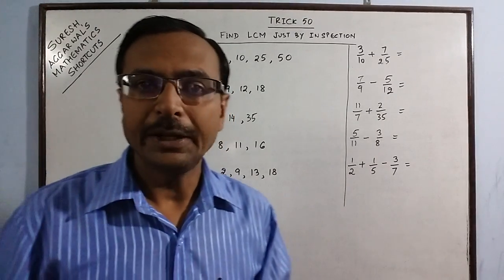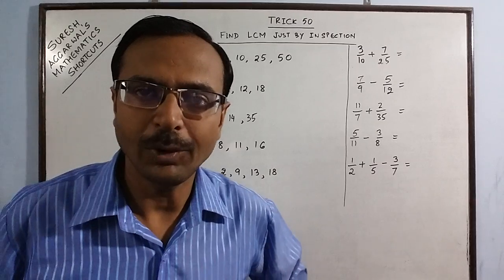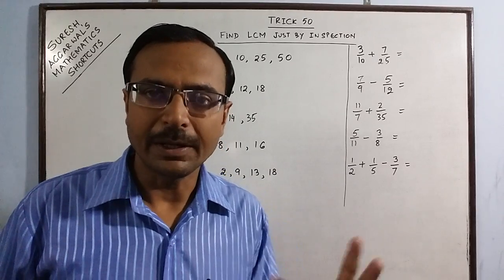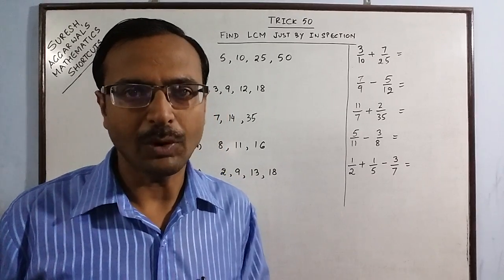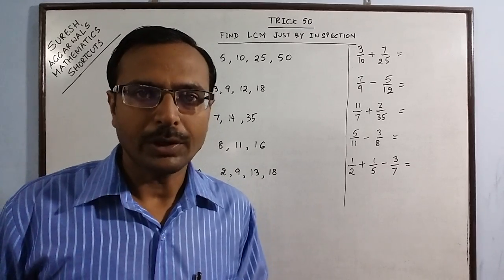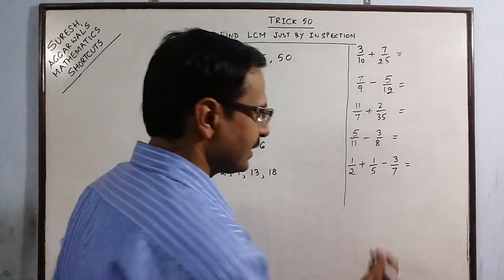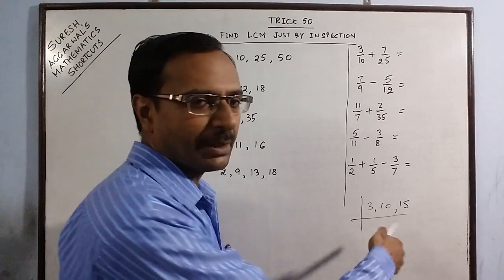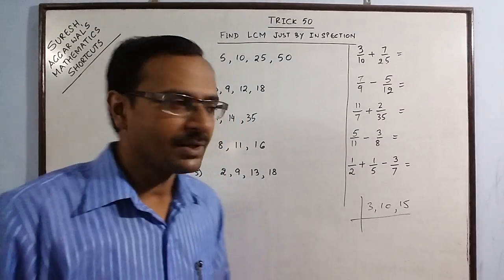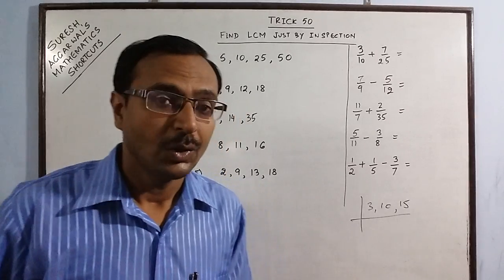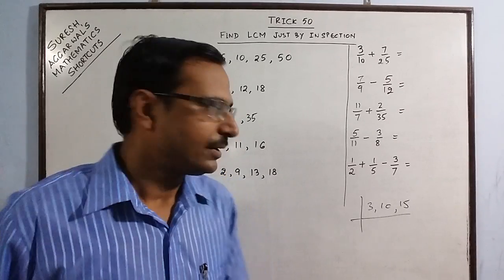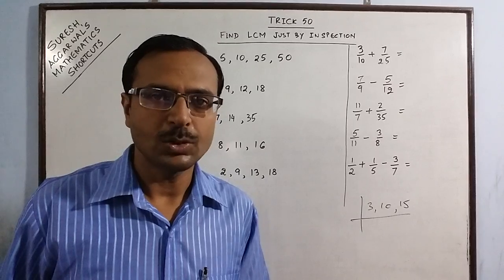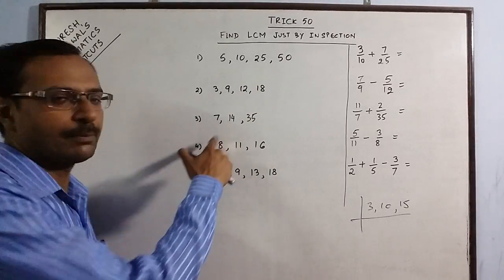Hello everyone. Today I am going to tell you how we can find the LCM of 2, 3, or 4 numbers just by inspection — just by looking at the numbers you can tell what is the LCM. Children at the basic level are taught to write the numbers and find common divisors, but when dealing with competitive-level questions these methods consume a lot of time. So today I'll show you how in 2 or 3 seconds you can find the LCM of 3 or 4 numbers.